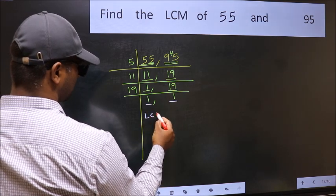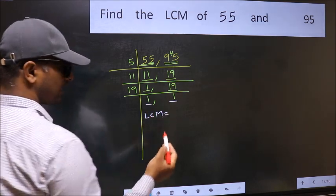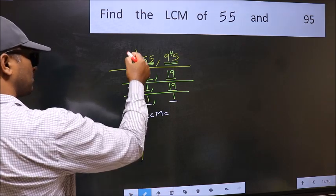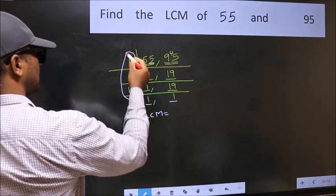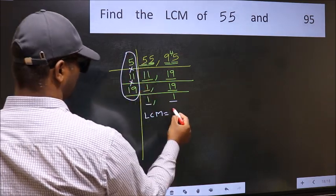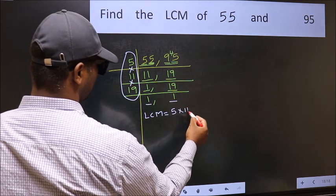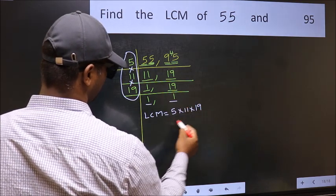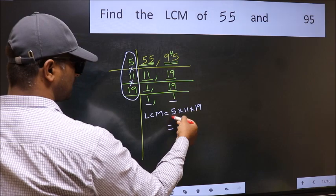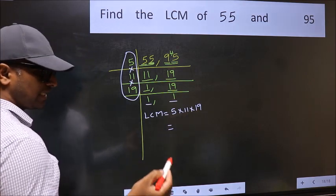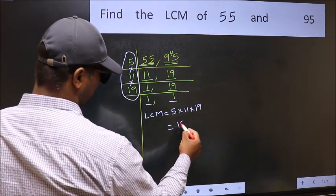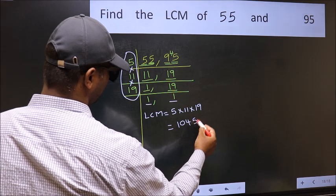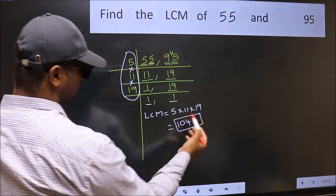So our LCM is the product of these numbers. That is 5 into 11 into 19. When we multiply these numbers, we get 1045 as our LCM.